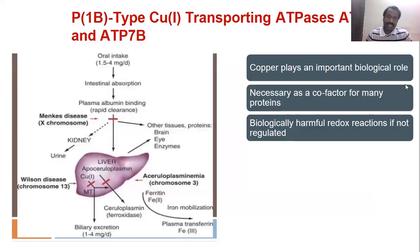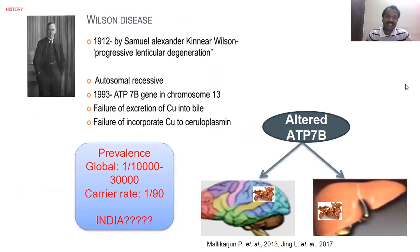Coming to today's topic, we all know that copper plays an important biological role, necessary as a cofactor for many proteins. But copper can also cause harmful redox reactions if it is not regulated properly. Today I would like to discuss two major diseases that are due to imbalance in copper homeostasis. The first one is Wilson disease, and the second one is Menkes disease. Let me start with Wilson disease.